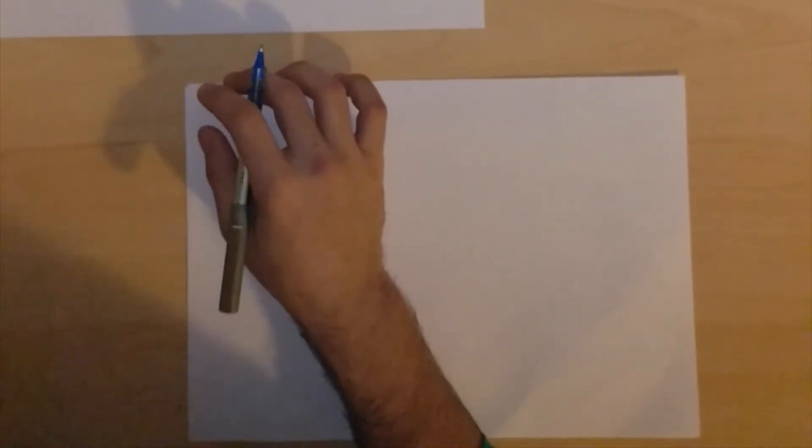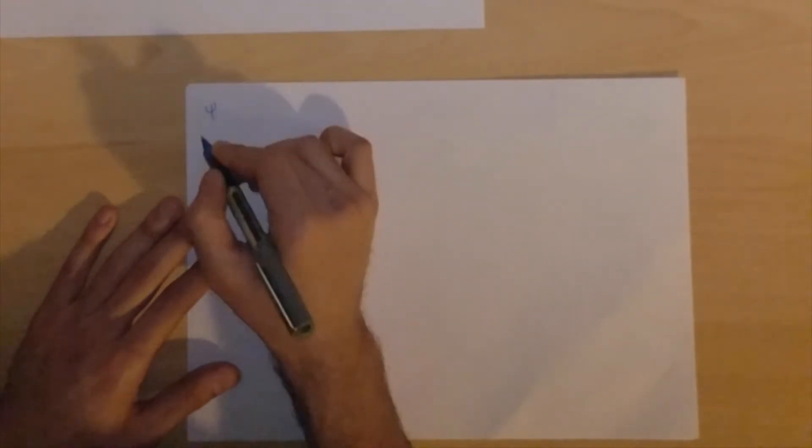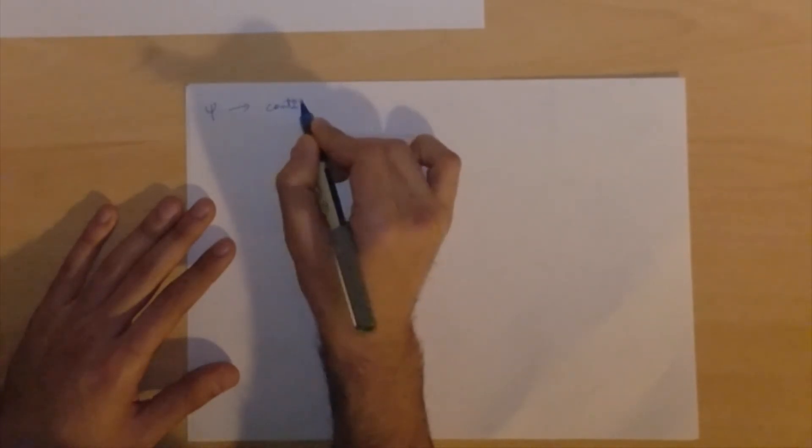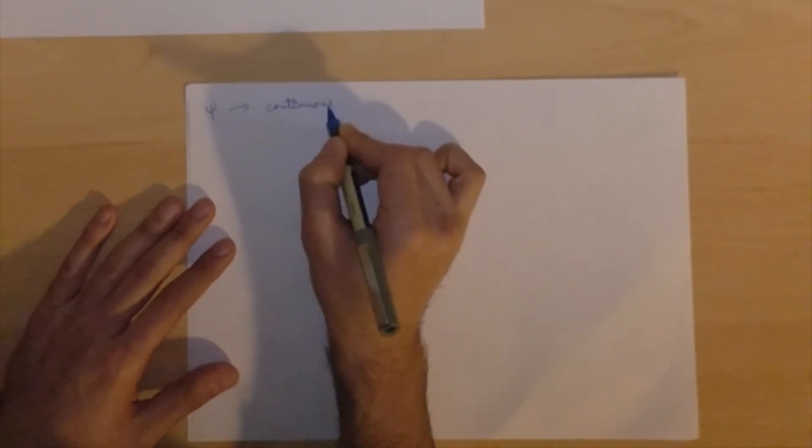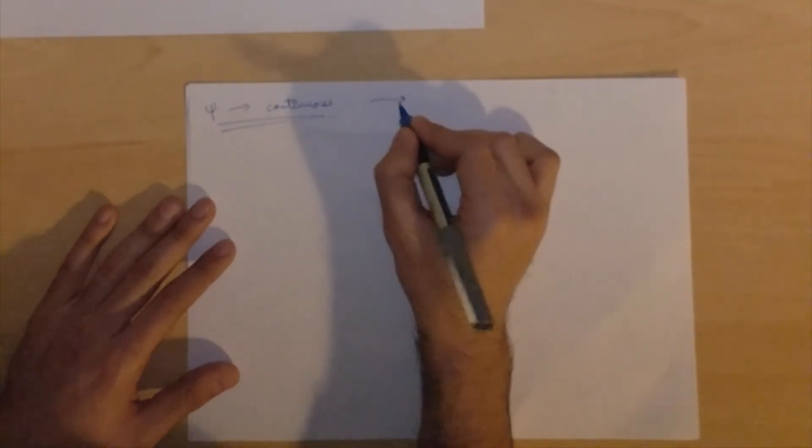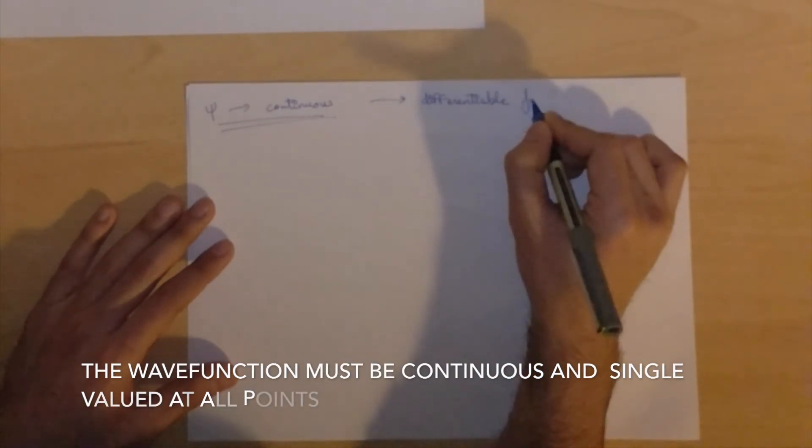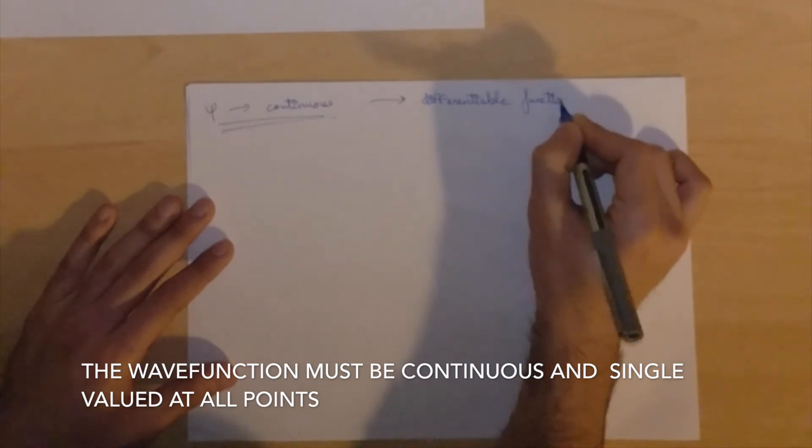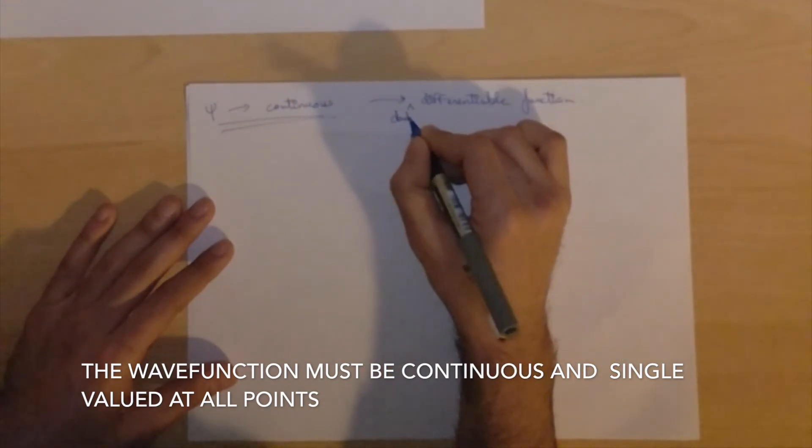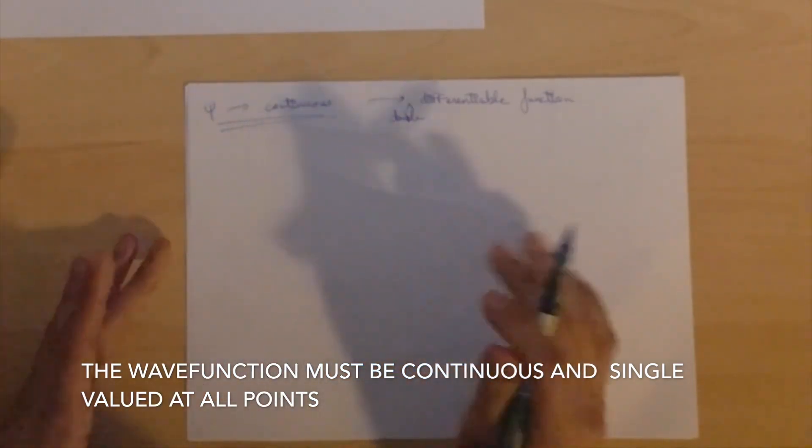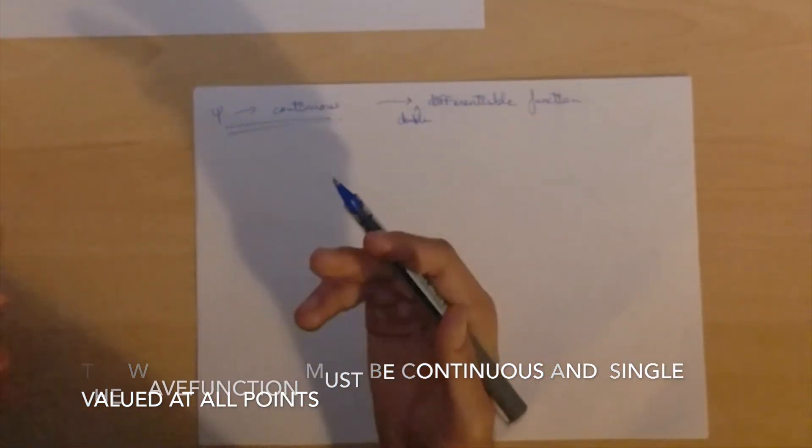Now apart from this, there are several other restrictions that Born came up with. The next one is that psi must be continuous. Now this is a relatively obvious one if you've done some differentiation, but that's because in Schrodinger's equation we differentiate psi twice. I should specify double differentiable. We differentiate psi, so it needs to be differentiable, because we do that as a process.